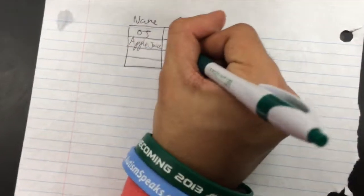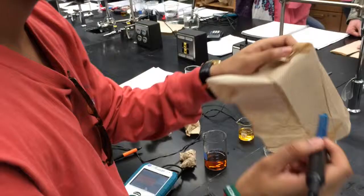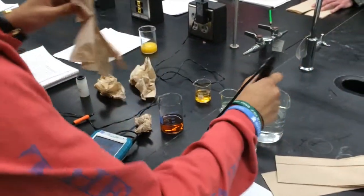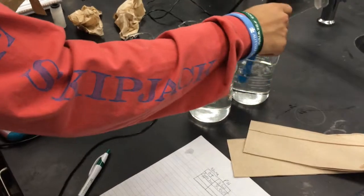Rashik is now testing the solution, apple juice, for its pH. The pH of apple juice comes out to 3.50. Now that Rashik is done, he cleans the probe of the pH meter and prepares it for storage.